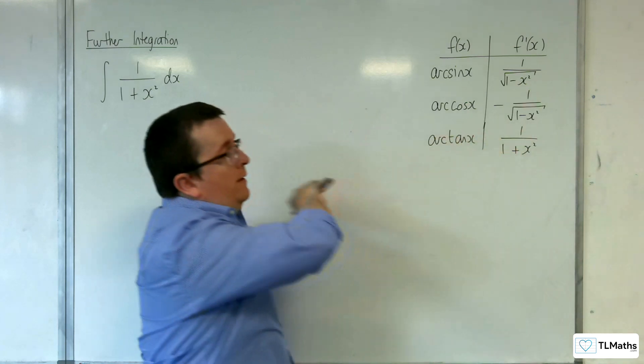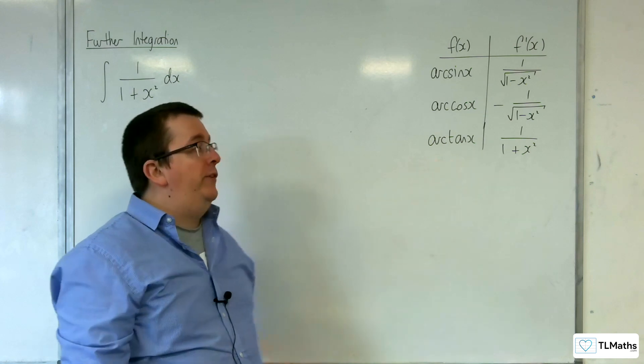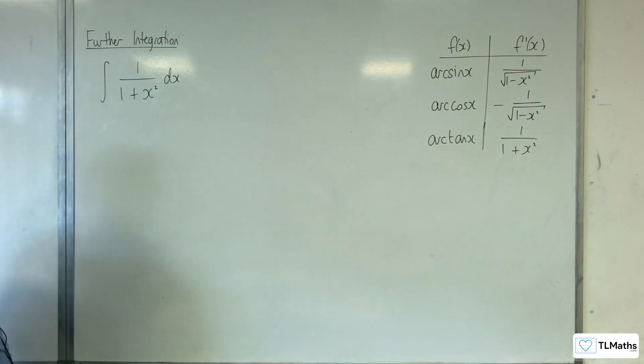So, 1 over 1 plus x squared must integrate to arc tan x plus some constant c. So, how do we get there?